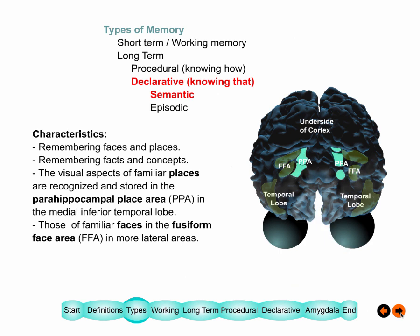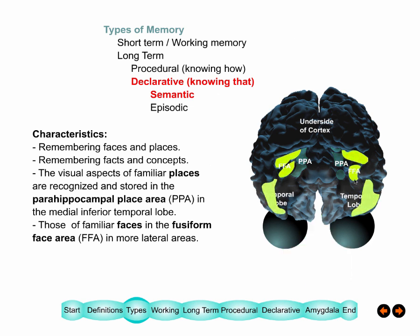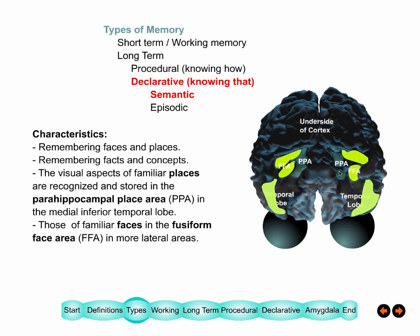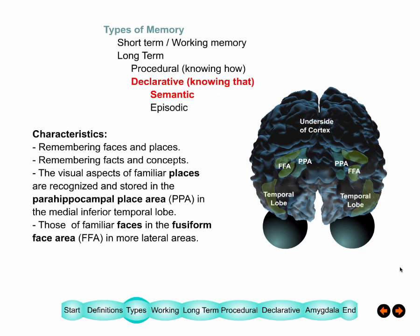One type of declarative memory is called semantic — remembering faces and places. The FFA (fusiform face area) is located on the underside of the brain, and beside it is an area called the Paracampal Place Area, where places are stored. When you're shown the Eiffel Tower, that area lights up. There are many other areas underneath the brain where all kinds of other objects and places are stored.